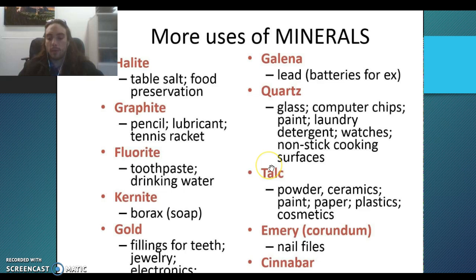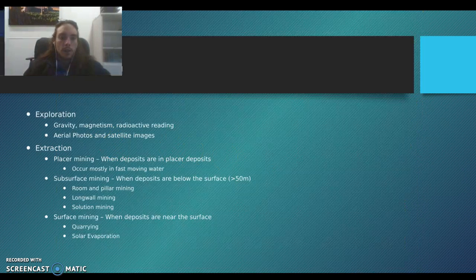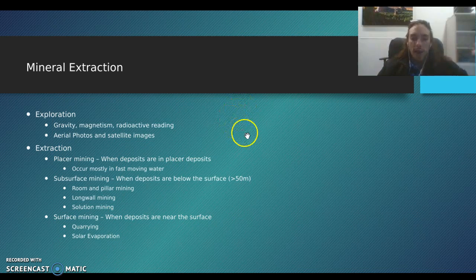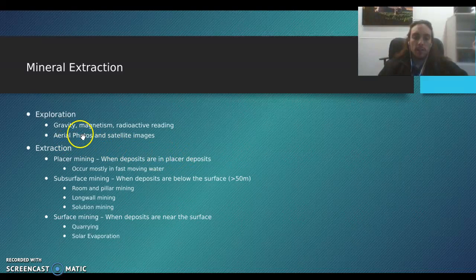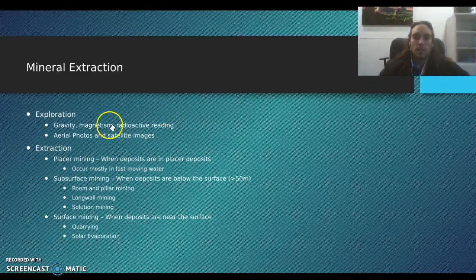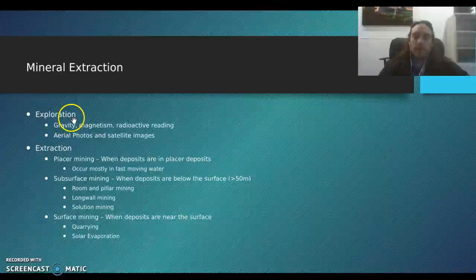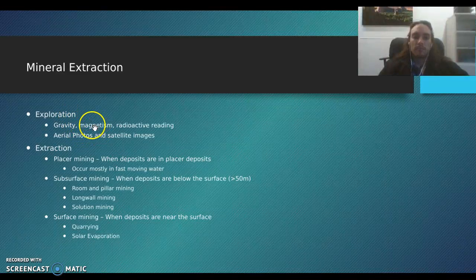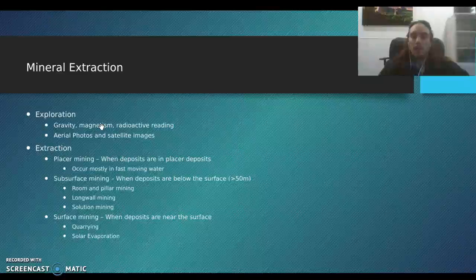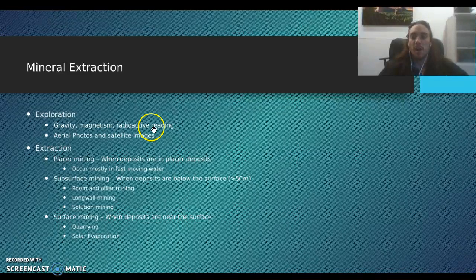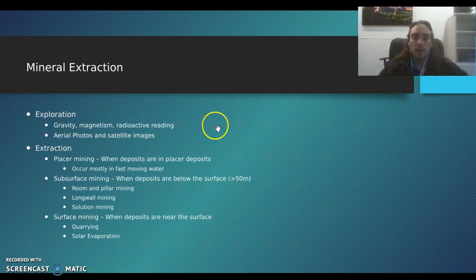There are a lot of uses for minerals that we don't think about all the time. To find minerals, we explore areas using gravity, magnetism, and radioactive readings. Gravity tells us an area is more dense, so there are probably certain minerals there. Magnetism tells us we have metallic minerals. And radioactive readings detect things like uranium.